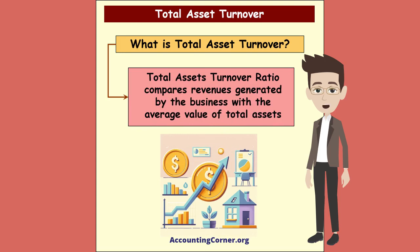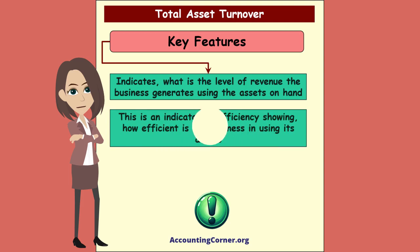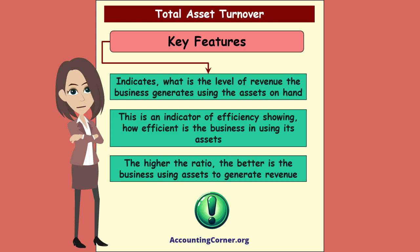Total Asset Turnover Ratio compares revenues generated by the business with the average value of total assets. It indicates what level of revenue the business generates using the assets on hand. This is an indicator of efficiency, showing how efficient the business is in using its assets. The higher the ratio, the better the business is using assets to generate revenue.